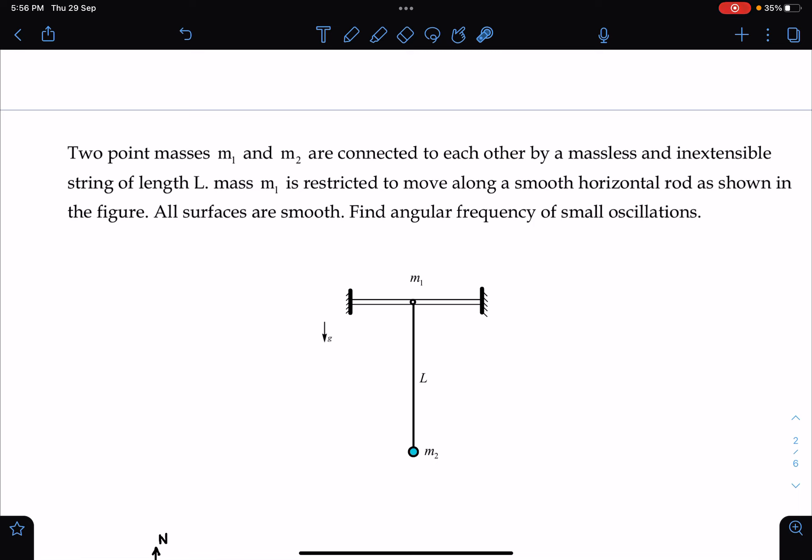Two point masses M1 and M2 are connected to each other by a massless and inextensible string of length L. Mass M1 is restricted to move along a smooth horizontal rod as shown in the figure. All surfaces are smooth and you have to find the angular frequency of small oscillation.